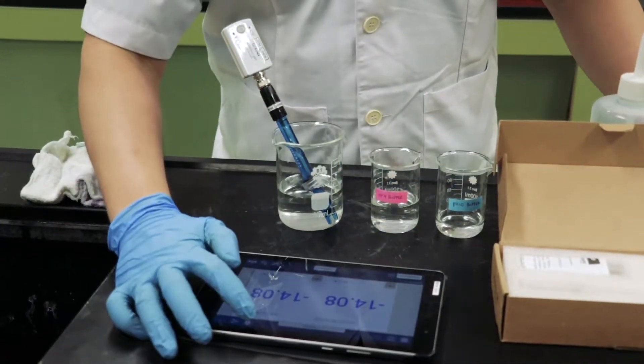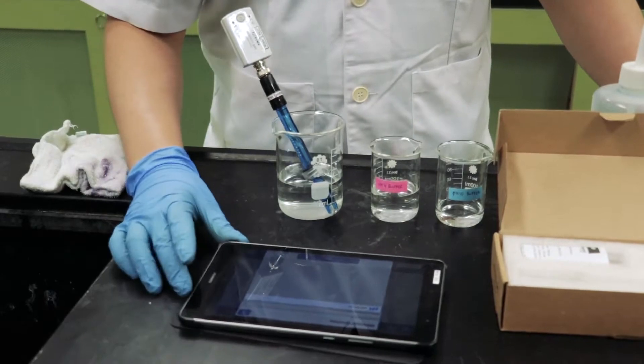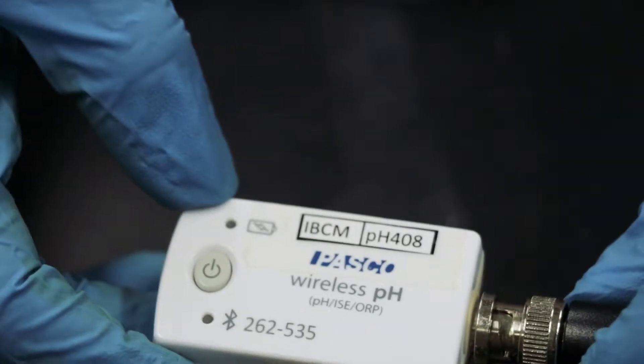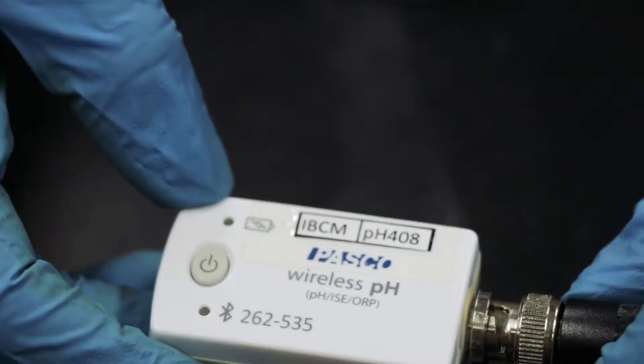Press the power button and connect your phone to the PH Probe via Bluetooth. The LED should display a single red flash to signal that the PH Probe is turned on.